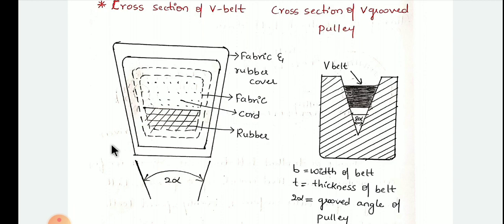Before I start with the V-belt drives, do watch the video till the end to understand the concepts clearly. We are going to discuss about advantages and disadvantages of both V-belt as well as timing belt drives. The sketch on the screen shows the cross-section of the V-belt drive on the left side, and on the right side, the cross-section of the V-grooved pulley.